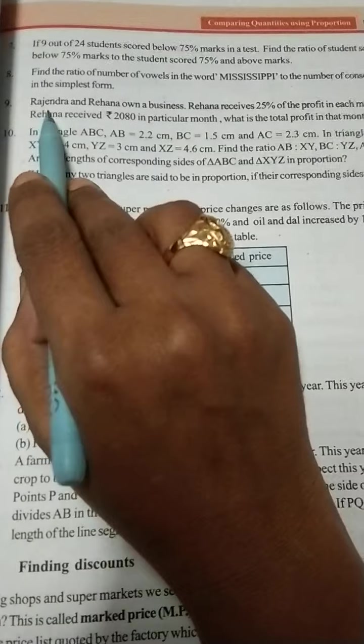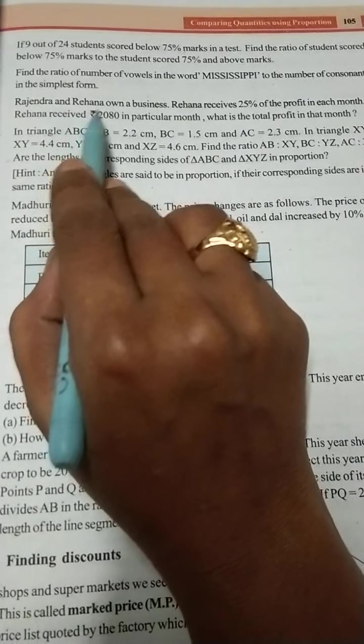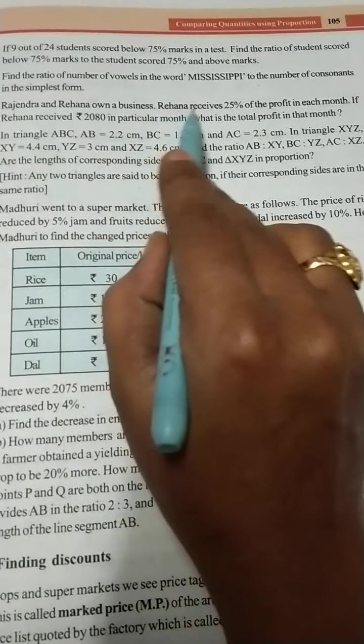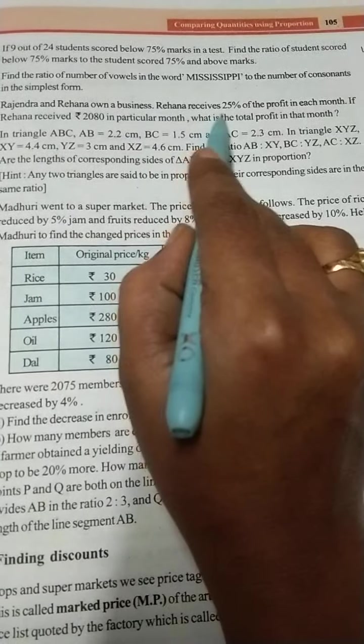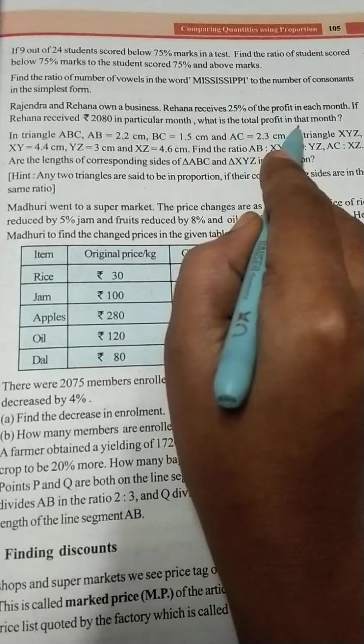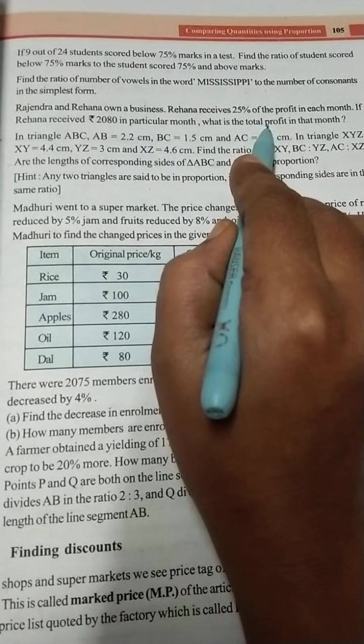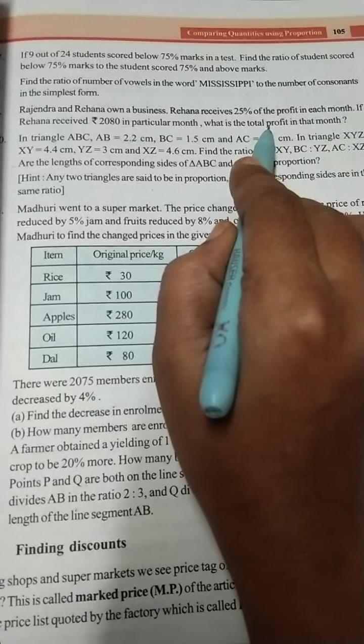Next, 9th question. Rajendra and Rehana own a business. Rehana receives 25% of the profit in each month. If Rehana received 2080 rupees in a particular month, what is the total profit in that month? What is the total profit in that month, we need to find out.